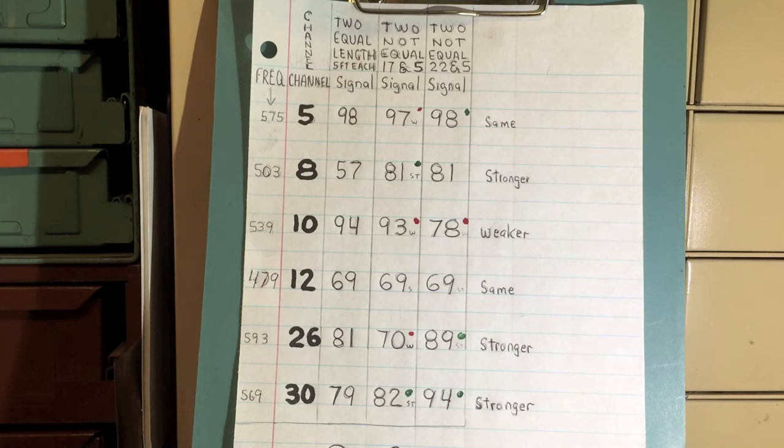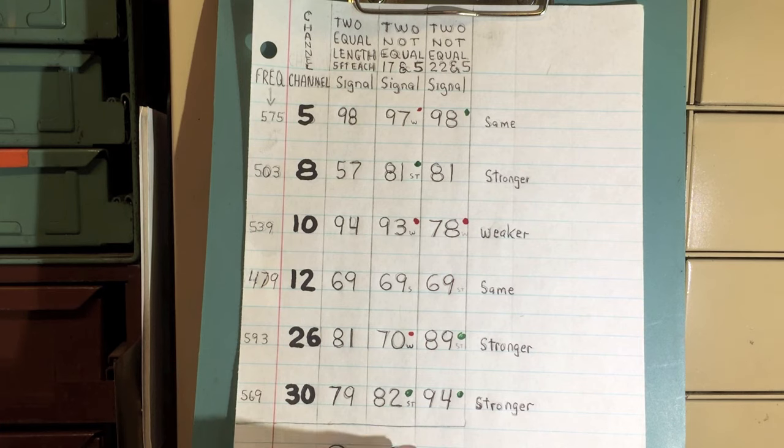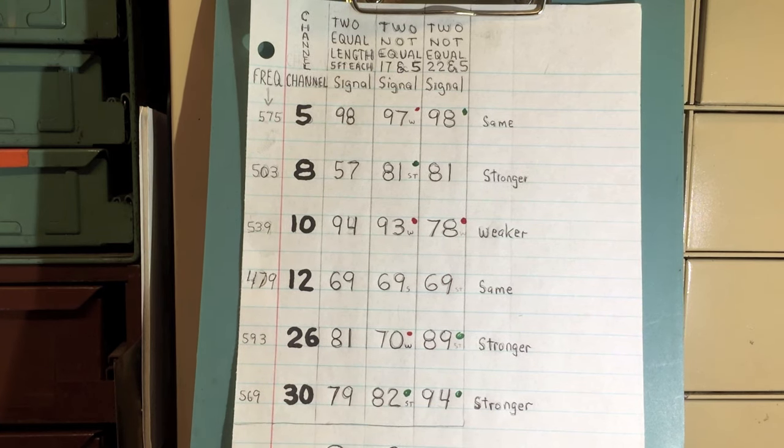So apparently there is something to the whole problem of trying to add different length coax coming from your antenna. Naturally, coax by its very nature is going to attenuate the signal somewhat.